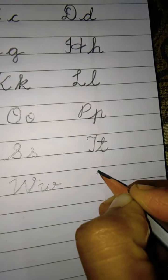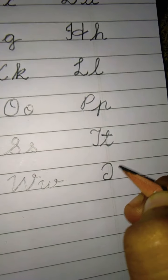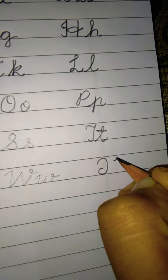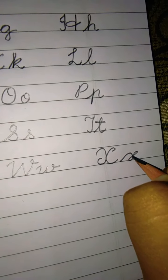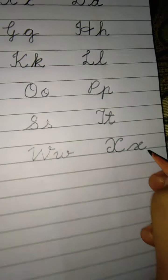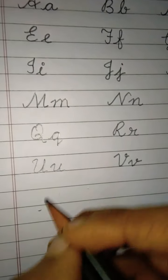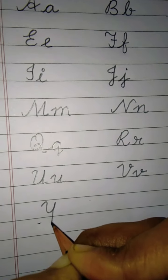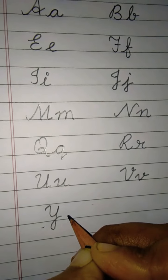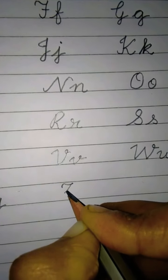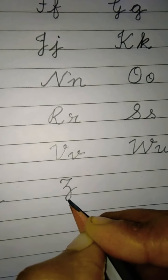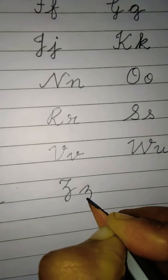X — you have to just draw like C, one opposite curve and one here — opposite. X. Then write small X — touch to the bottom line, go up, make a loop, and write it like a C — X. Then the last two letters: Y — this is your capital Y. And the last one is Z — slightly curve, come down, little below the bottom line. In the same way, Z.